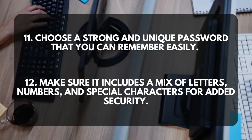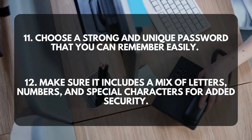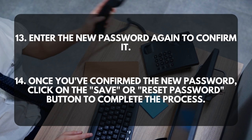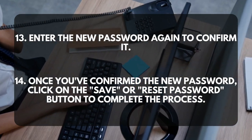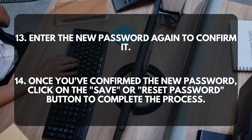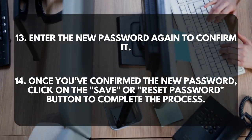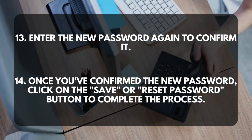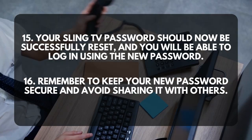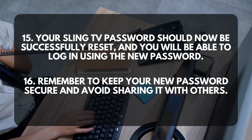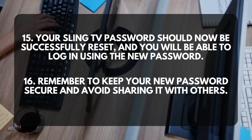Twelve: make sure it includes a mix of letters, numbers, and special characters for added security. Thirteen: enter the new password again to confirm it. Fourteen: once you've confirmed the new password, click on the Save or Reset Password button to complete the process. Fifteen: your Sling TV password should now be successfully reset.